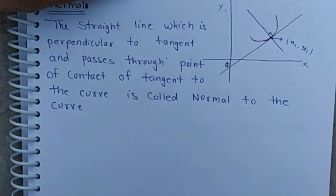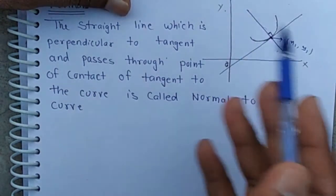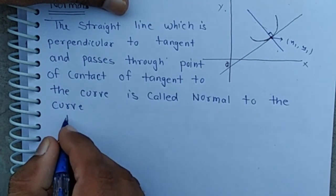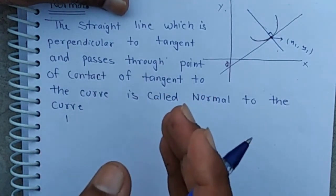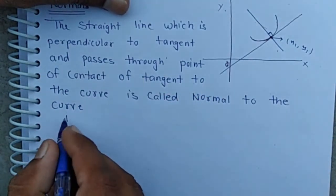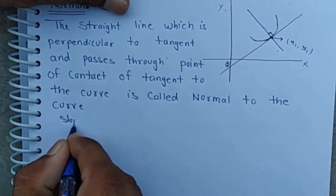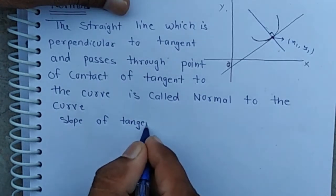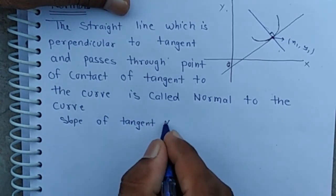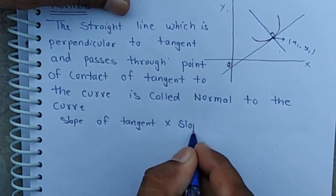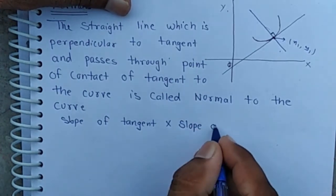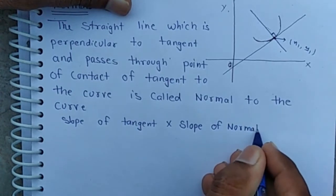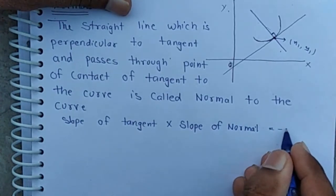Since tangent and normal are perpendicular to each other, then product of these slopes is equal minus 1. Means slope of tangent into slope of normal is equal minus 1.